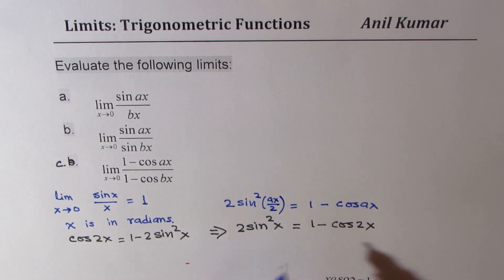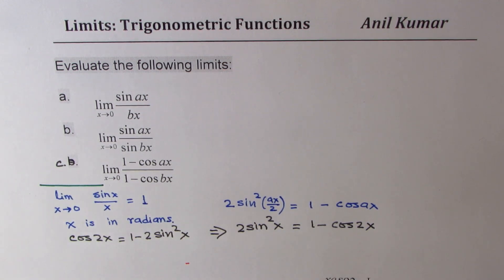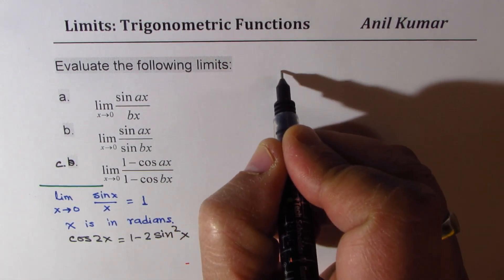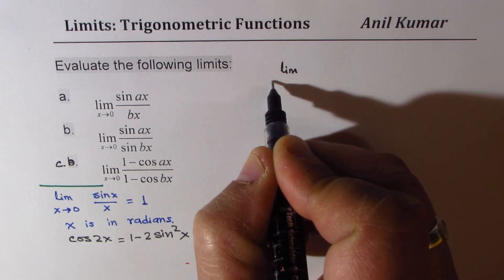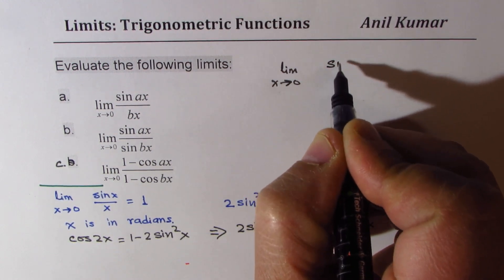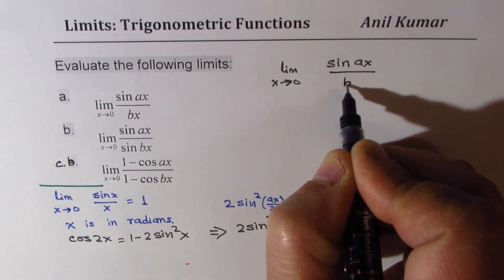That will help you to easily find limits of these functions, and I hope you see how they are all related. Now let me take the very first one right here. We will find the limit as x approaches 0 for sine ax over bx.